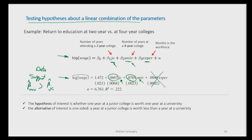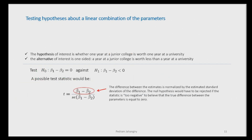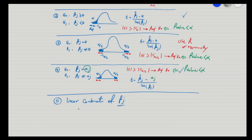Now let's say we don't care about the sample and want to make statements about the population. The null hypothesis is whether one year of junior college is worth exactly equal to one year of university college. The alternative — the one we're interested in — is a one-sided test: that a year of junior college is worth less than a year of university college. So the alternative hypothesis is β1 minus β2 is less than zero.